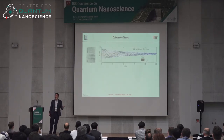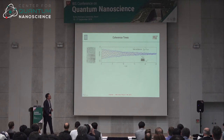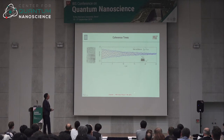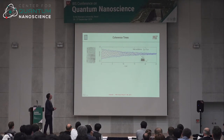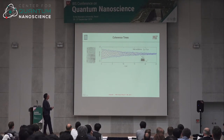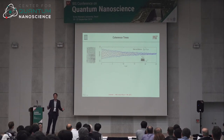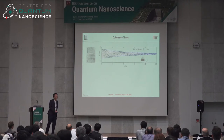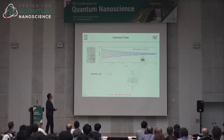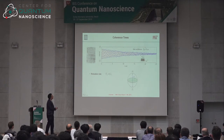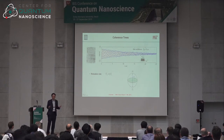Let's now look at superconducting qubits specifically. This qubit from about eight years ago had the longest coherence time recorded in superconducting qubits at the time. These are Rabi oscillations — you can see the oscillations decay in time due to decoherence. There are a couple of types of decoherence: the relaxation rate gamma-1, which is the inverse of T1, the relaxation time.